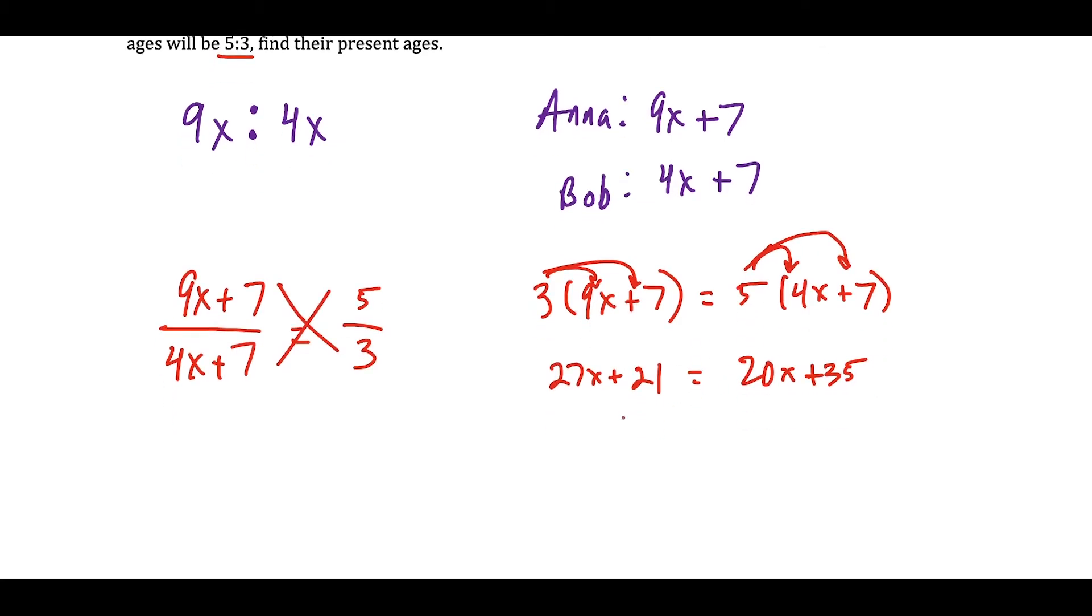Now to solve this out, we're going to subtract 20x on both sides. In one step, we could also subtract 21 on both sides. Notice 20x minus 20x cancels out, 21 minus 21 cancels. We have 27x minus 20x is 7x, and that's equal to 35 minus 21 is equal to 14, which tells us after we divide by 7 that x is equal to 2.